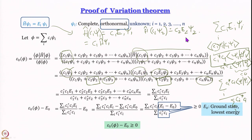We have proved the variational theorem — the upper limit theorem — which states that ε₀ − E₀ ≥ 0. In other words, the functional ε₀ calculated by varying the parameters of φ can never be less than the actual energy E₀. That is why the variation theorem is so useful.